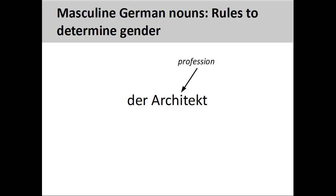As we have seen, nouns designating male beings are masculine. Nouns describing professions, such as 'Architekt' (architect), are masculine. There is a way to form a feminine version of these nouns, which we will explore in a later presentation.